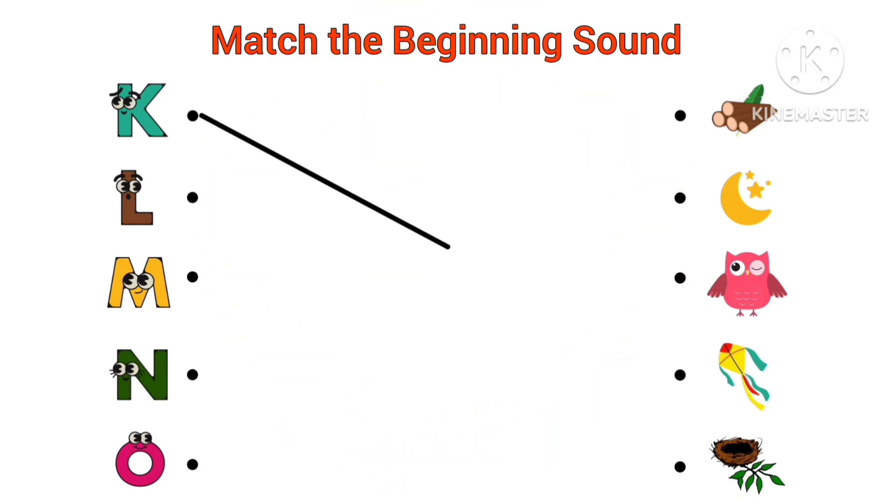K, K for kite. Beginning sound of kite is K. L, L for log. Beginning sound of log is L.